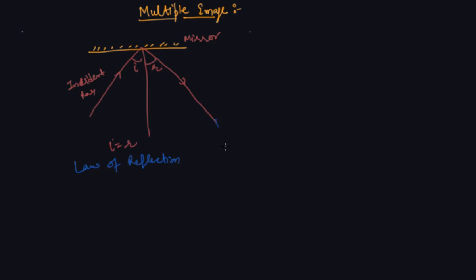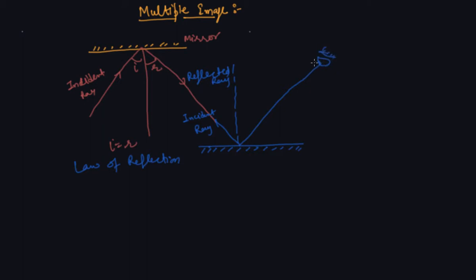Now, if I place another mirror here, what you will notice is that this reflected ray will act as an incident ray for this second mirror. The image will now be formed at a new position. If there is an eye and here is the object, this angle I equals R, and this is the final reflected ray. In this way you can make multiple images of an object.